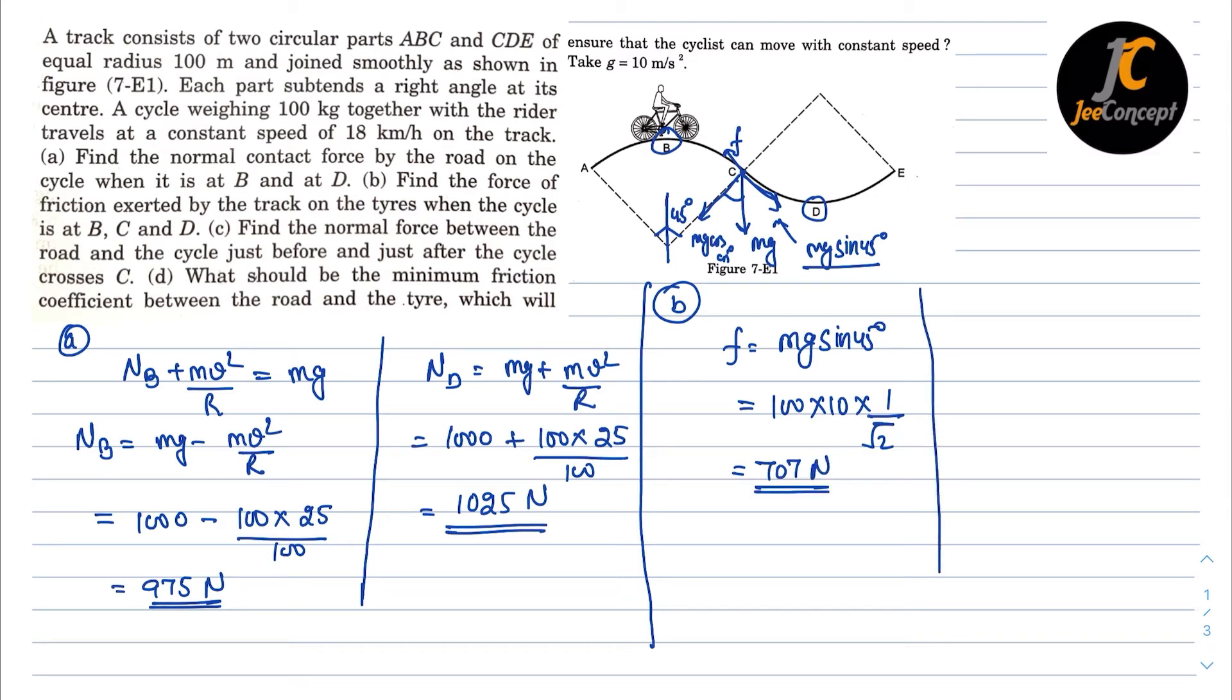Now for part C, we have to calculate the normal force between the road and the cycle just before and just after the cycle crosses C. So let's say there is a point 1 here and the second point is here. Now draw it separately. So let's say this is a curved path from A to C. Here I am just trying to calculate just before C, which is MG will act downward. The normal will act perpendicular to the surface, the MG cos theta.